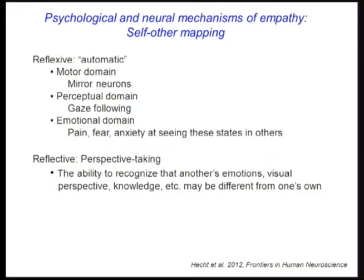Several authors have tried to divide this behavior into two categories: reflexive, automatic, unconscious behaviors — mirror neurons in the motor domain, gaze following, and pain, fear, and anxiety when you see these states in others — versus more reflective perspective-taking where you're much more conscious and deliberate. But it's been very clear that these distinctions are extremely hard to make; it's difficult to tell what's conscious and what's unconscious.